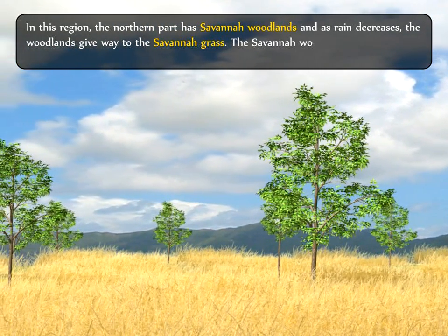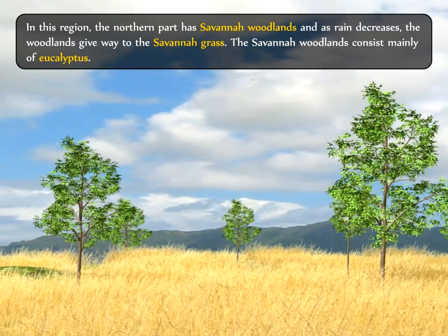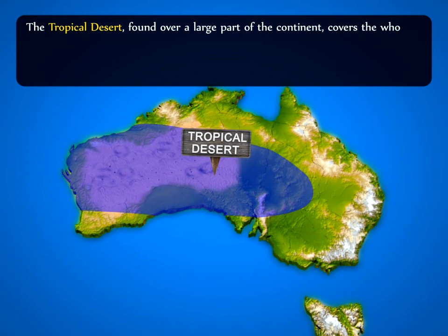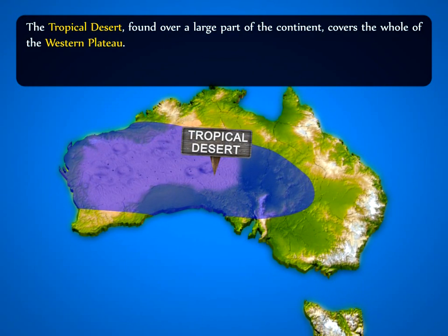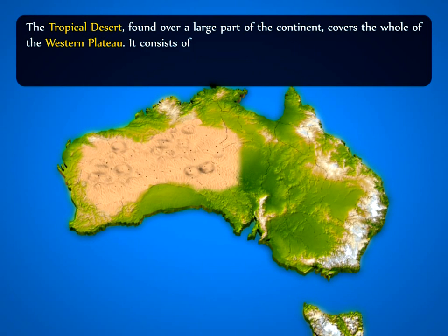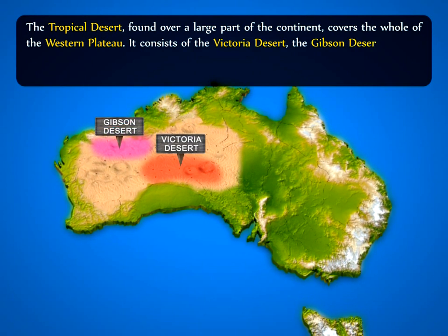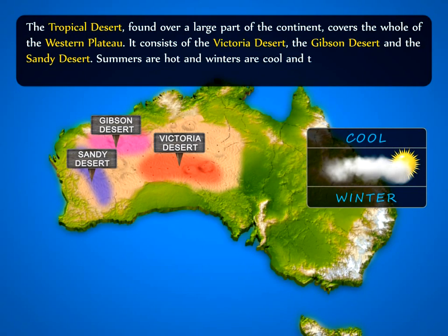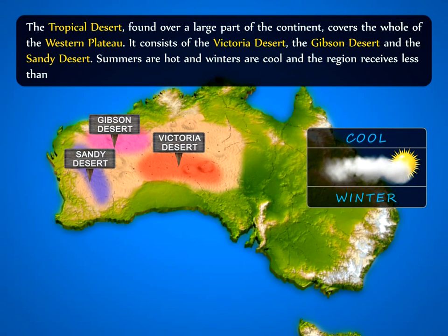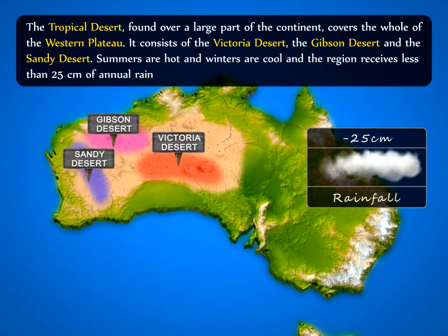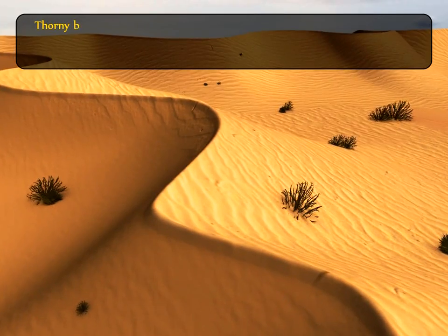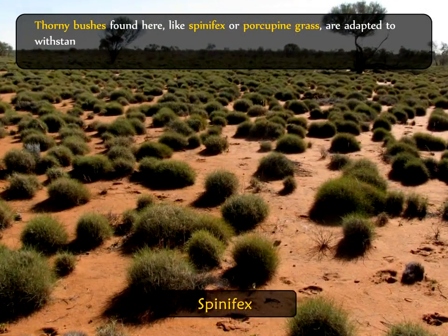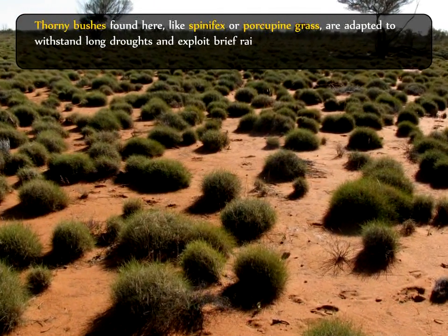The savannah woodlands consist mainly of eucalyptus. The tropical desert, found over a large part of the continent, covers the whole of the western plateau. It consists of the Victoria Desert, the Gibson Desert, and the Sandy Desert. Summers are hot and winters are cool, and the region receives less than 25 cm of annual rainfall. Thorny bushes like spinifex or porcupine grass are adapted to withstand long droughts and exploit brief rainfalls.